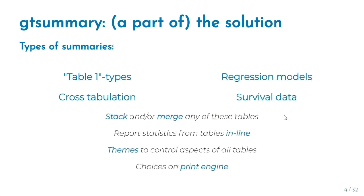There are several types of summary tables available within GT summary. The first we'll talk about are table-one types — in medical research, the most frequent table one is a description of your cohort. GT summary can also summarize regression models, create cross-tabulations, and summarize survival data. One important feature is the ability to easily merge any two GT summary tables, for example when you need two regression models side by side.